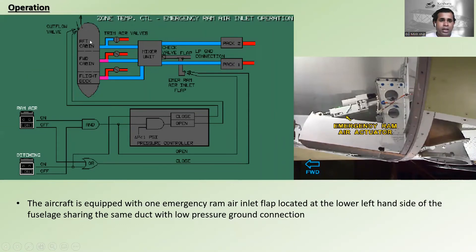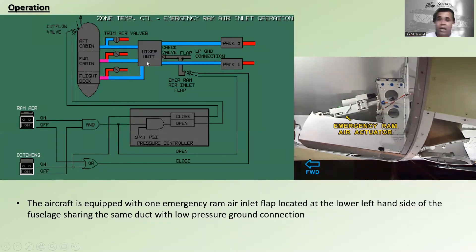You can see this graph showing the aircraft: the flight deck, forward cabin, and cabin. This shows the mixture unit and the packs. The operations — how the air comes in and what the operation is — were covered in the previous lesson, so if you missed those please go and check them.